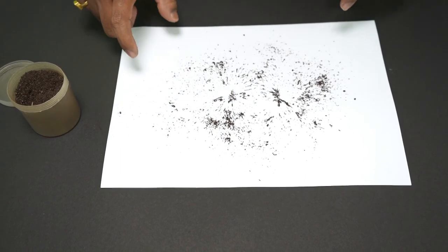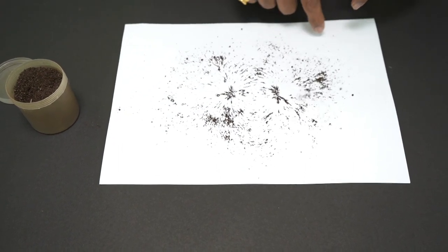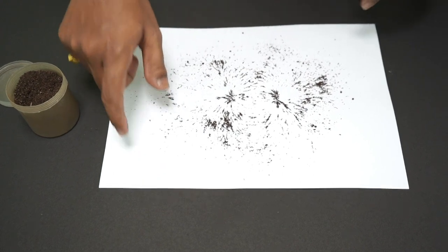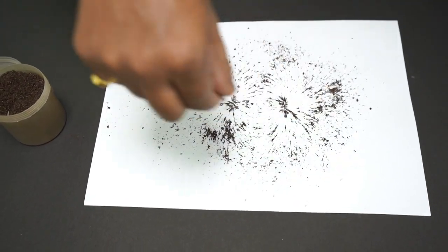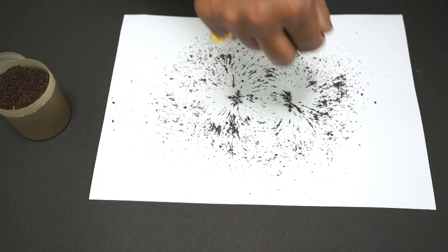So now, after you sprinkle, just tap. Now, can you see some pattern here? Wow! And that's the magnetic field.